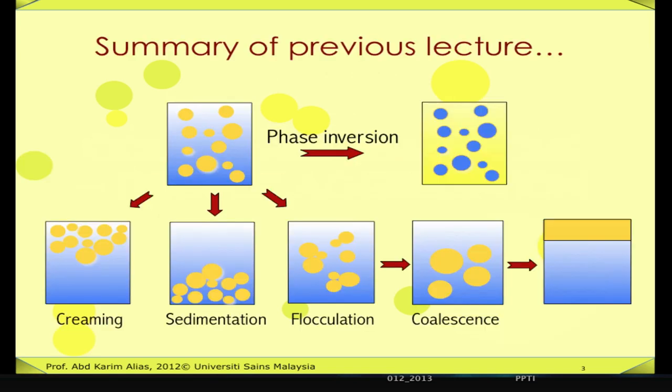Let's review what we have learned from the previous lecture. Kathy, can you summarize important points from the previous lecture? We have learned that emulsion can become unstable or separate into two layers. This involves several mechanisms such as creaming and sedimentation, flocculation, coalescence, phase inversion, and Ostwald ripening.